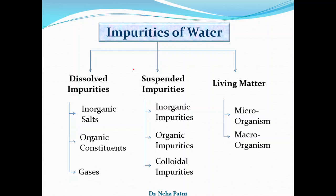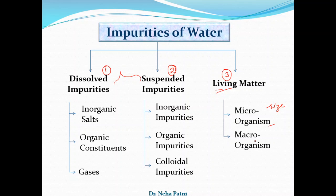Commonly, impurities of water can be divided into three categories: dissolved, suspended, and living. Biological impurities are kept in the third category — these are living organisms present in the water, while the other two are non-living. Living impurities are further classified by size: microorganisms such as fungi, bacteria, and viruses, and macro-organisms such as fish. If they are present, you have to treat the water.